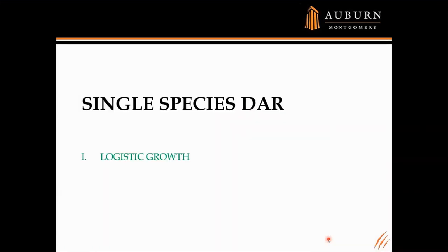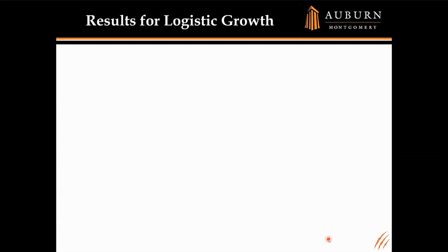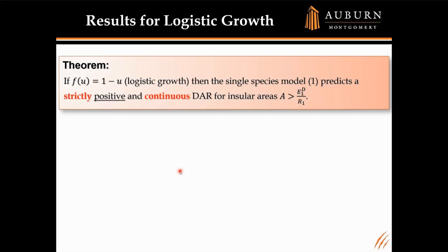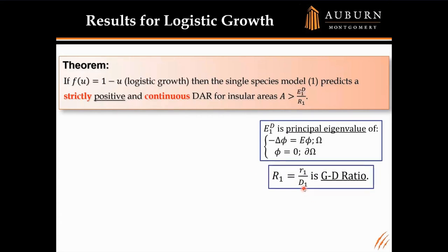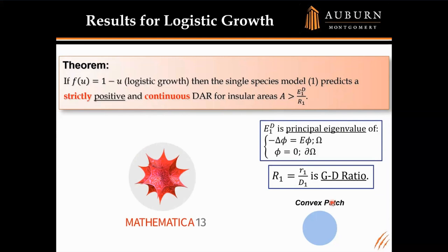For the single species case with logistic growth, we proved in this paper that the single species model always predicts a strictly positive and continuous DAR, as long as the area A is bigger than the critical threshold E1D divided by R1. Now we want to use Mathematica to get hands-on experience and see what this DAR relationship actually looks like. Let's take a convex patch — a disk — and run some code.